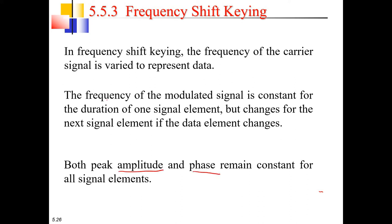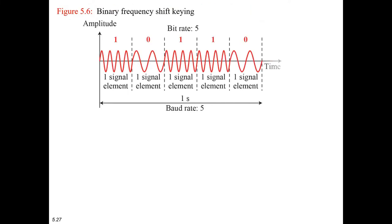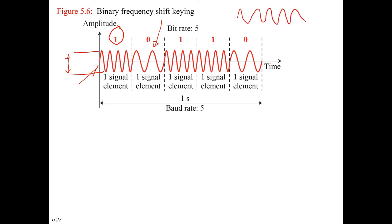So in frequency shift keying, amplitude and phase remain constant while frequency changes for a signal element. Now let us see the diagram representation of frequency shift keying. Here we have a representation of an analog signal. Binary digit one is represented by a particular signal frequency and zero is represented by another particular frequency. The amplitude remains the same and the phase also remains the same — there are no phase changes — but the frequency changes.